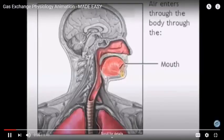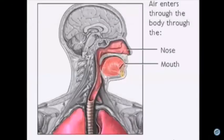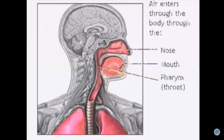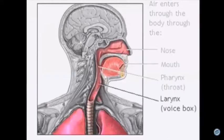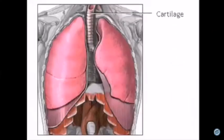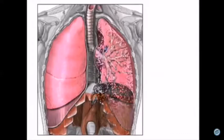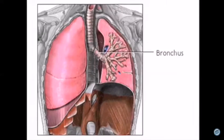Air first enters the body through the mouth or nose and quickly moves to the pharynx or throat. From there, the air passes through the larynx or voice box and enters the trachea. The trachea is a strong tube that contains rings of cartilage that prevent it from collapsing. Within the lungs, the trachea branches into a left and right bronchus, which further divide into smaller branches called bronchioles.